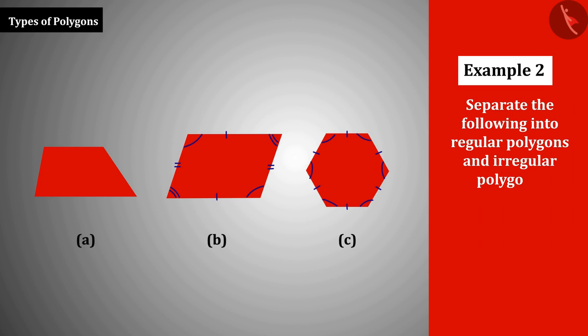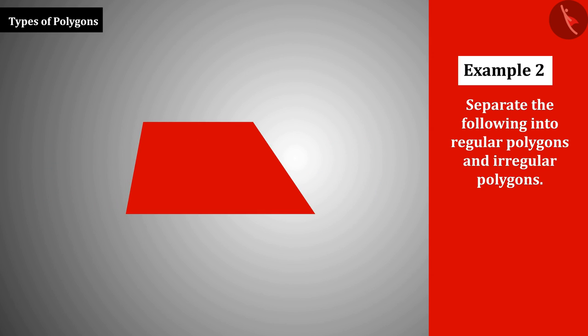irregular polygons. We can see that the measurement of the sides in polygon A are not the same. A polygon whose measurement of any side or angle is not the same as the measurement of other sides or angles is an irregular polygon.